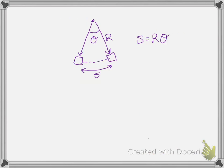Let's look at this point mass moving in a circle. I've chosen one segment of that circle where the point mass moves through an angle theta, and it moves along an arc length s at a radius r from the pivot point. And we know that s equals r theta, where theta is in radians. s is a distance — not a displacement, because displacement has to be a straight-line distance — s equals r theta.